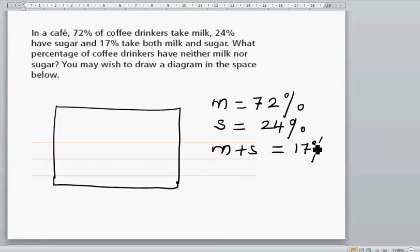Let's say you've got two circles for the two situations. Let me make this bigger so we have space to write the numbers in. This is milk, and this represents the people with sugar. This region is milk and sugar.